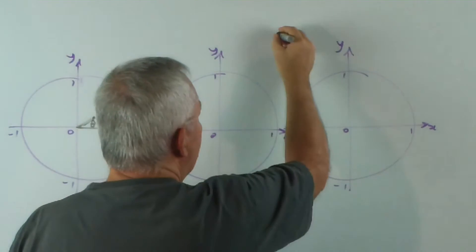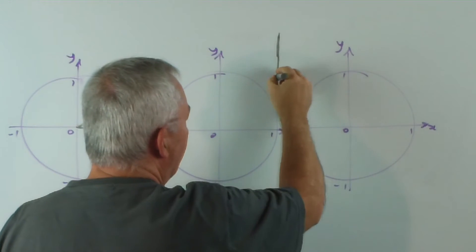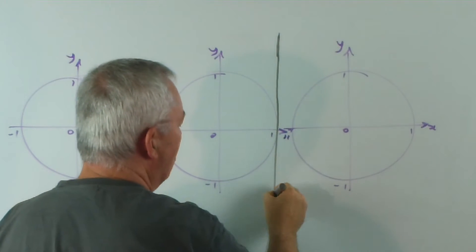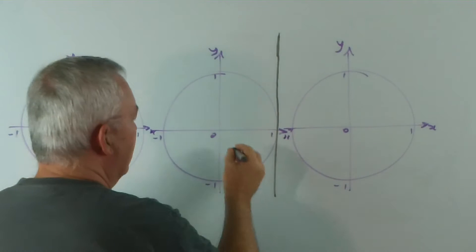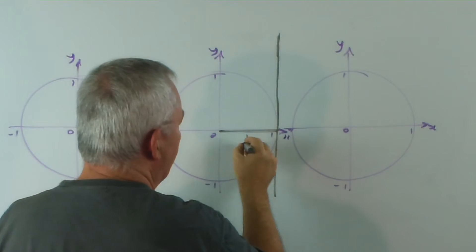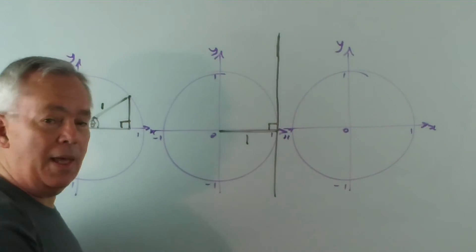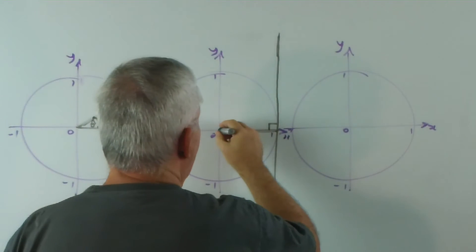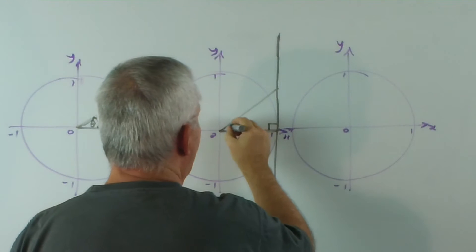In the next one, we draw a tangent, a vertical tangent, at X equals one. That means that this distance is one unit, and I think you can see that. And again, we draw our triangle with angle theta.